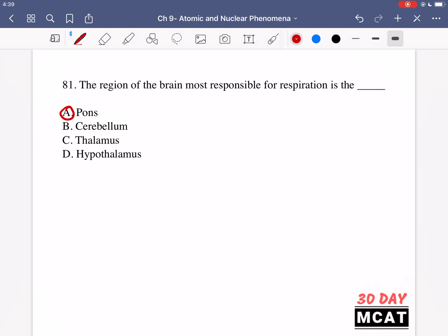The cerebellum is more so related to things like balance and coordination, so that's incorrect. The thalamus is a relay station for many different senses and so not really related to respiration. And the hypothalamus has a lot of different functions, some of these include controlling body temperature and thirst and hunger but not respiration. So A is the correct answer.